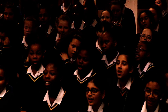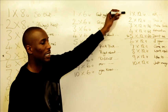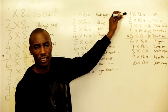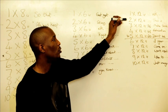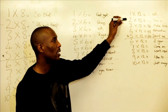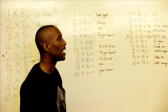Three times eight. One times twelve is twelve. Two times twelve is twenty-four. Again, again.